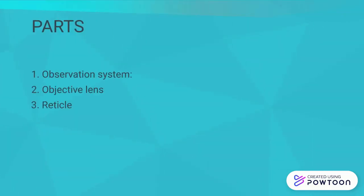Next is observation system. Observation system includes an objective lens, a reticle which is similar to a target but its main function is to provide clarity of the target.